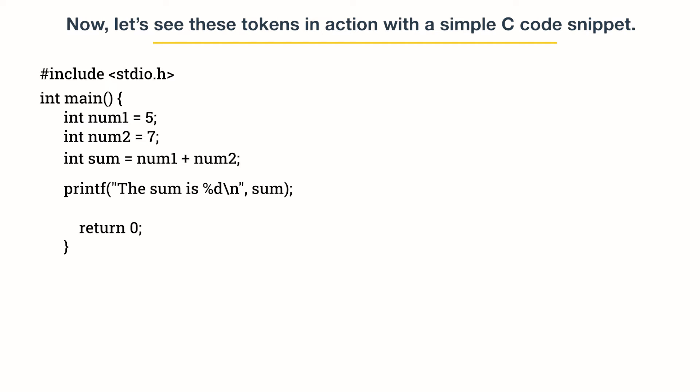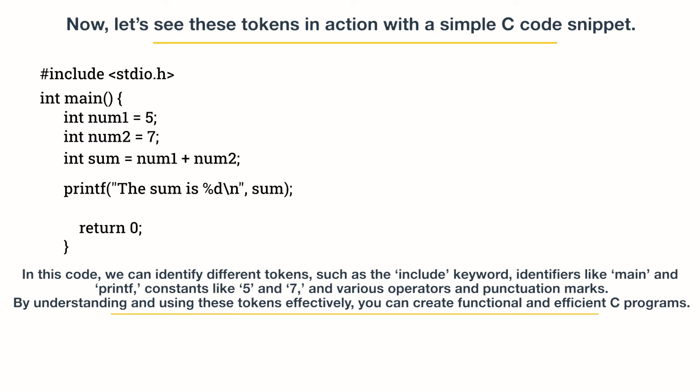Return 0. In this code, we can identify different tokens, such as the include keyword, identifiers like main and printf, constants like 5 and 7, and various operators and punctuation marks.